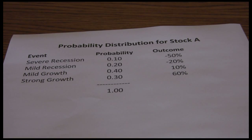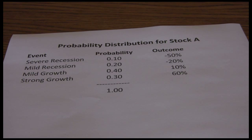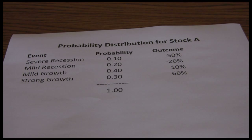In our chapter on risk and return we're going to have quite a few different videos walking through various problems. This is the first video and we're going to use it to introduce the idea of expected return and standard deviation. In order to do that we first have to start with the idea of a probability distribution, which is a statistical or financial tool we can use to forecast possible outcomes when we invest in a particular security, whether it's a stock or a bond.